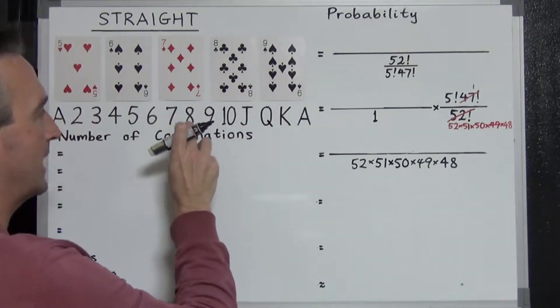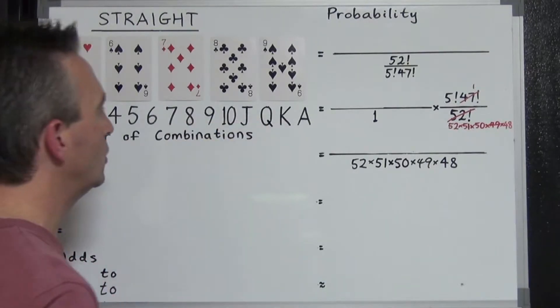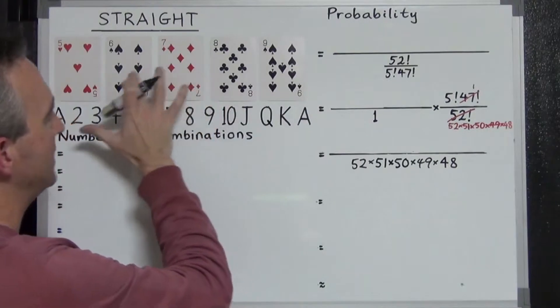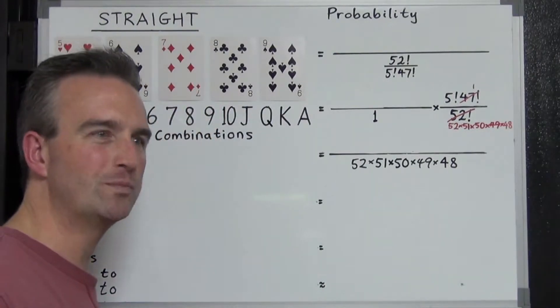Or you could have eight, nine, ten, jack, queen. And what makes a straight quite common is that the suits can all be mixed up. The suits don't matter at all. They can be anything.